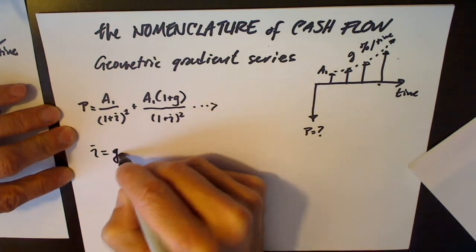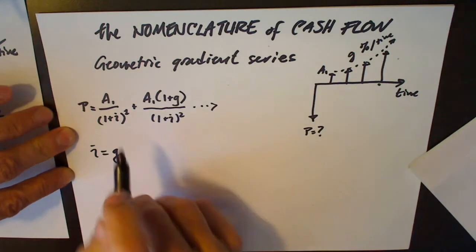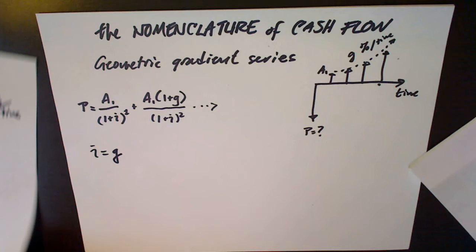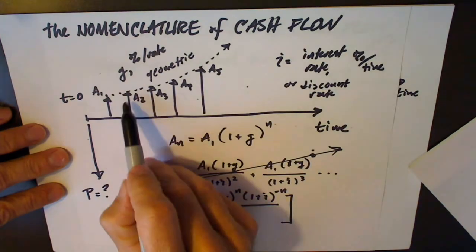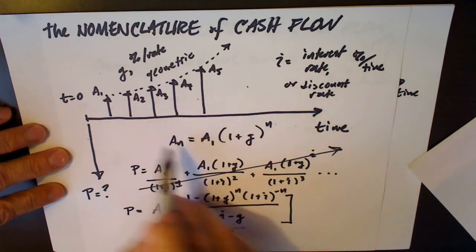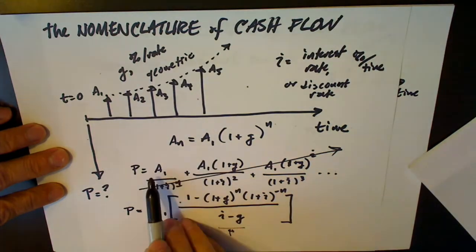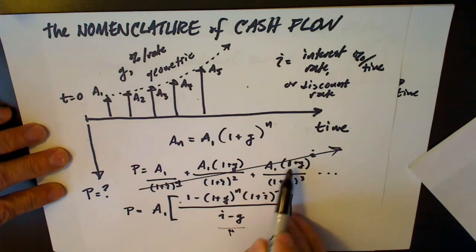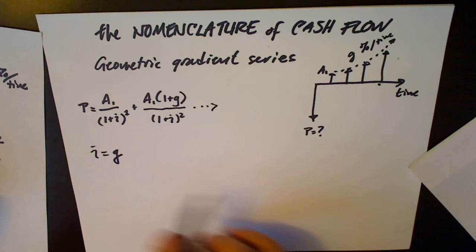In this video here's the special case of I equals G and I've condensed the formula we used in the previous video here where we treated each one of these payments individually as if they were future values and we're summing up their present worth by calculating separate present worth factors for each one. You can see that this simplifies.